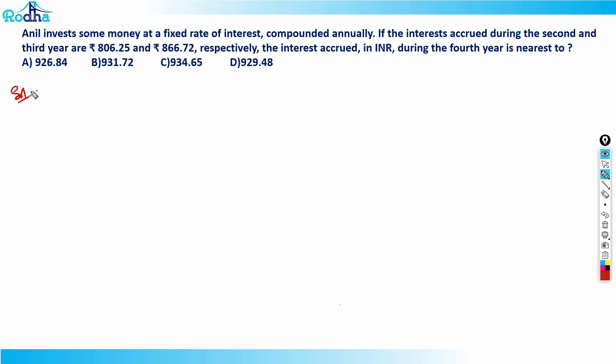You can understand this by a small example. First, let's say I have taken a loan of ₹100 from the bank. If I took a loan of ₹100 from the bank at a rate of 20% per annum CI, how do I write this?